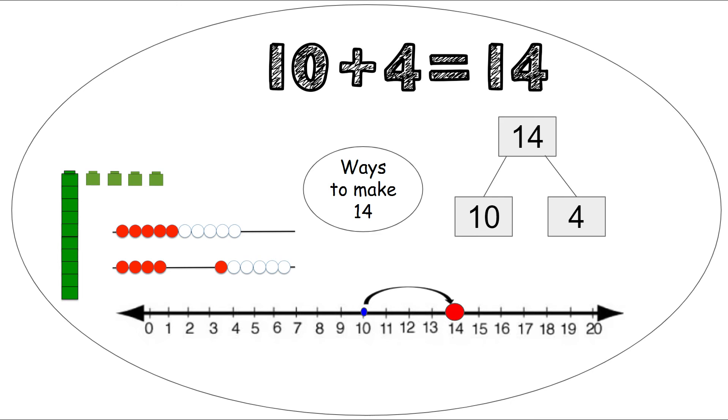We can also use our unifix cubes. Again we have a tower of 10 and then we have 4 more. So we could count on: 10, 11, 12, 13, 14. And we can also use our 10 frames. So we have one 10 frame all filled, so I know right away there's 10 dots, and then we count 4 more. 10 and 4 more make 14.